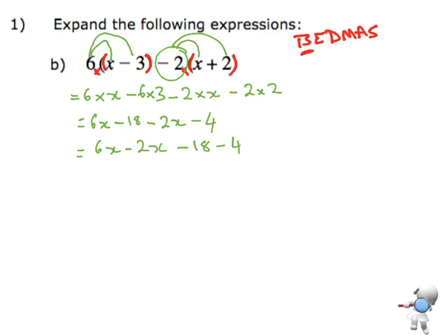But remember, as I move them, for example, this negative 18, that negative stays with the 18. This negative stays with the 2x, and that negative stays with the 4.